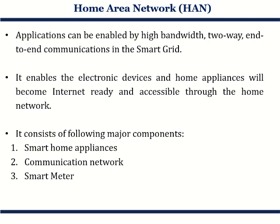This enables all electronic devices and home appliances to become internet-ready — that is, if they are on the internet, they are easily accessible throughout the home network, or even outside the home network. The major components of HAN are: first, smart home appliances; second, communication network; and third, the smart meter. Smart home appliances include devices like an Amazon Echo Dot, a smart washing machine, or a smart generator. Communication can be via Bluetooth, Wi-Fi, or Zigbee. The smart meter communicates with all other appliances inside the home.